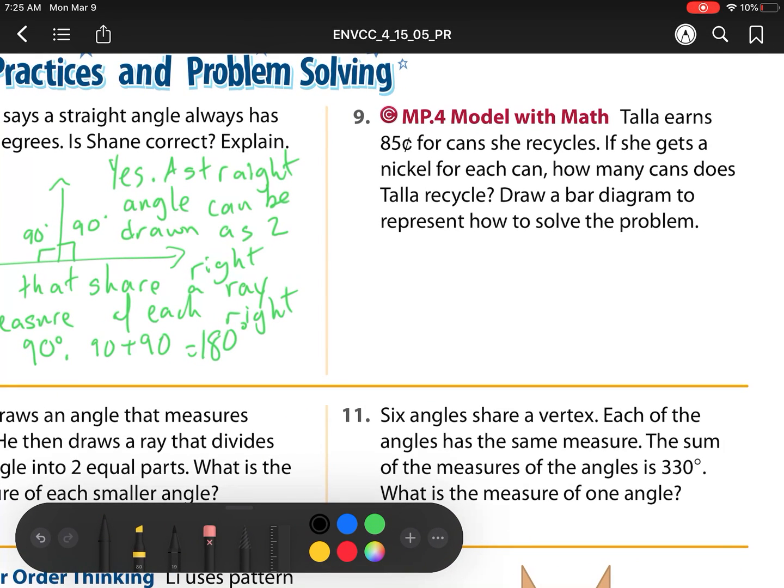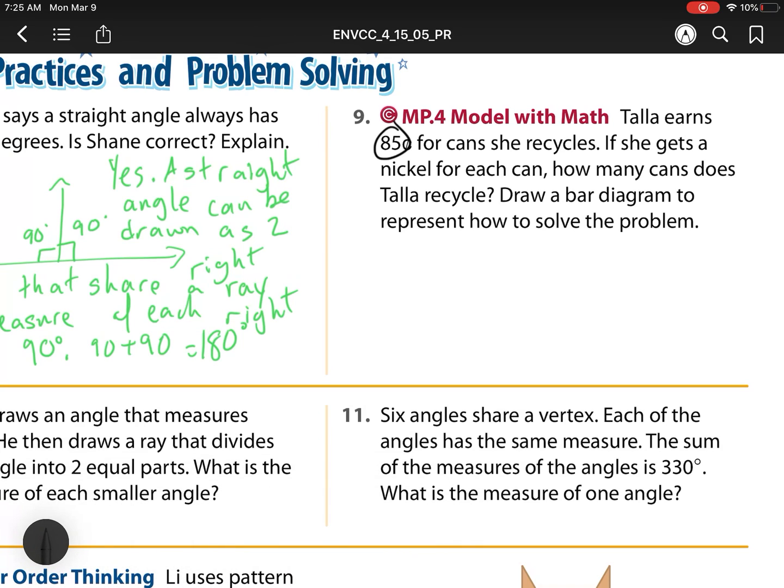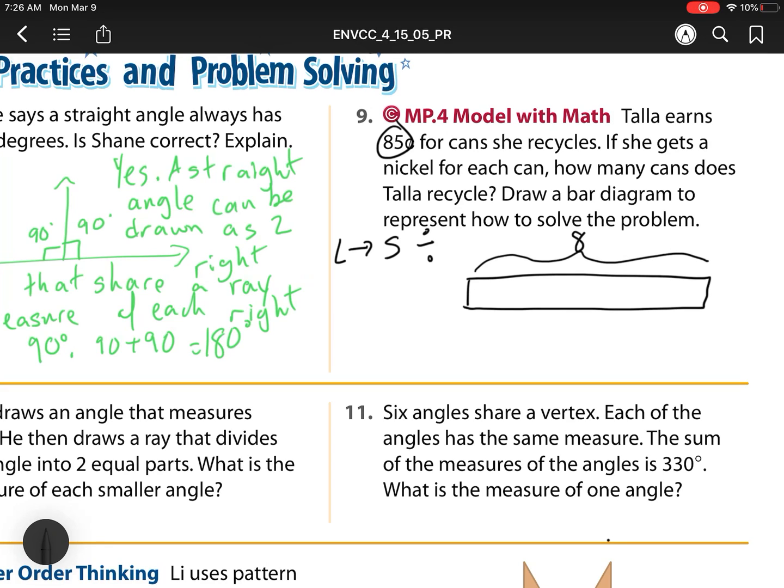I'm heading off to number nine. Tala earns 85 cents for cans to recycle. She earns a nickel for each can. How many cans does Tala recycle? So here I'm going from something large to something small and equal groups. So what is that? That is division. So let's draw a bar diagram to represent how I solve the problem. Here I'm going to start with my large item, which is 85 cents. And 85 cents is my total. So that's the total earned.